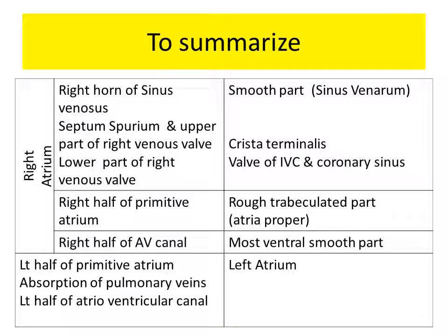To summarize: the right horn of the sinus venosus contributes to the smooth part of the right atrium. The septum spurium and the upper half of the right venous valve form the crista terminalis. The lower part of the right venous valve forms the valve of the inferior vena cava and the coronary sinus. The right half of the primitive atrium forms the rough trabeculated part of the right atrium. The right half of the AV canal forms the most ventral smooth part. The left half of the primitive atrium, absorption of the pulmonary vein, and the left half of the atrioventricular canal together form the left atrium.